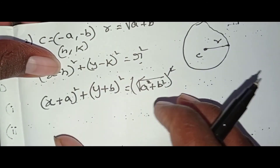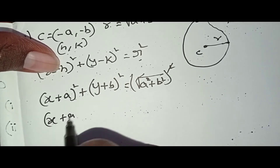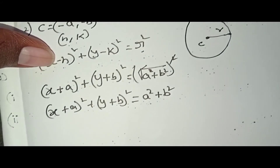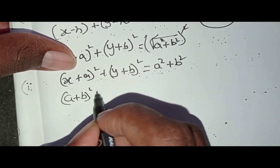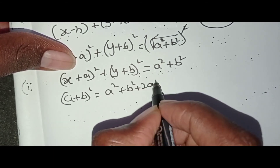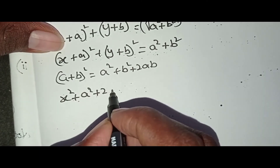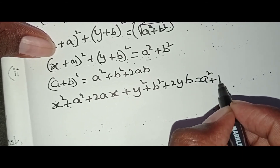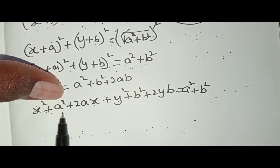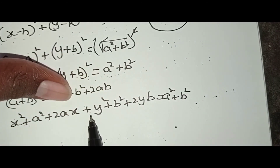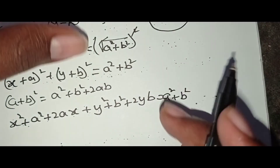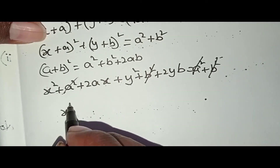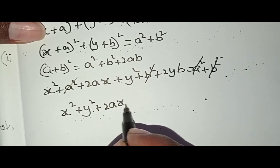Expanding (x + a)² + (y − b)²: we get x² + a² + 2ax + y² + b² − 2yb. Using the identity (a + b)² = a² + b² + 2ab, we expand to get x² + y² + 2ax + 2by.